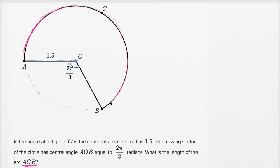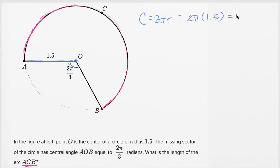The way I would tackle this: think about what's the circumference of the entire circle, and then what fraction of the entire circle is this arc length. Circumference is equal to two pi times r — in this case our radius is 1.5 — so it's going to be two pi times 1.5. Two times 1.5 is three, so the circumference of the entire circle is three pi.